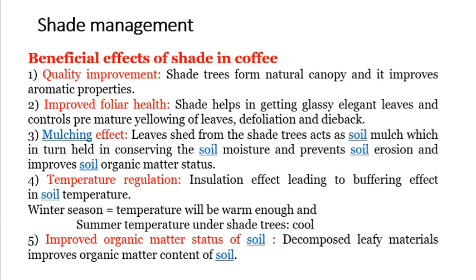Regarding shade management: shade trees form a natural canopy and improve the aromatic flavor properties of coffee, improving foliar health. Shade helps in getting glossy, elegant leaves and controls premature yellowing of leaves, defoliation and die-back. The mulch effect: litter from shade trees acts as soil mulch, conserving soil moisture, preventing soil erosion and improving soil organic matter status. Temperature regulation: the insulation effect leads to a buffering effect on soil temperature — in winter, temperature remains warm, and in summer, temperature under shade trees remains cool.